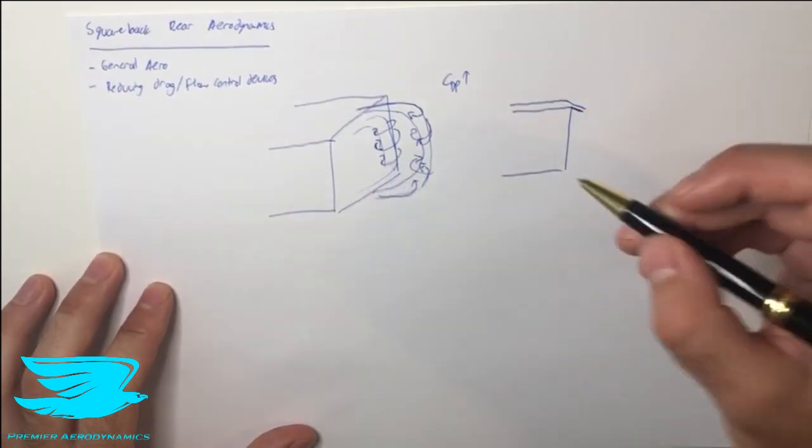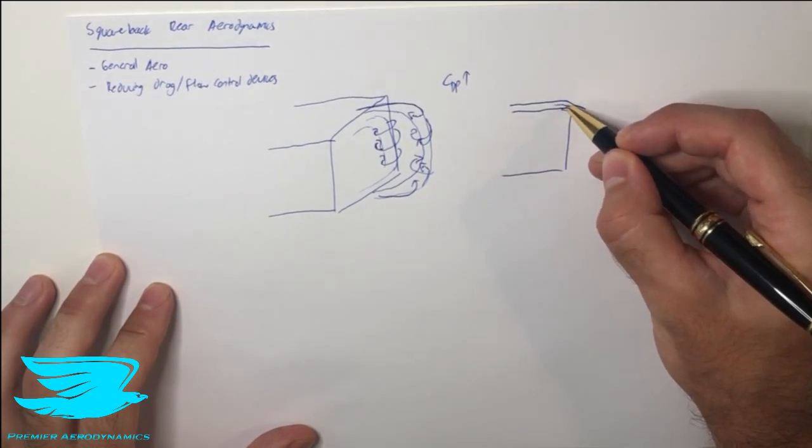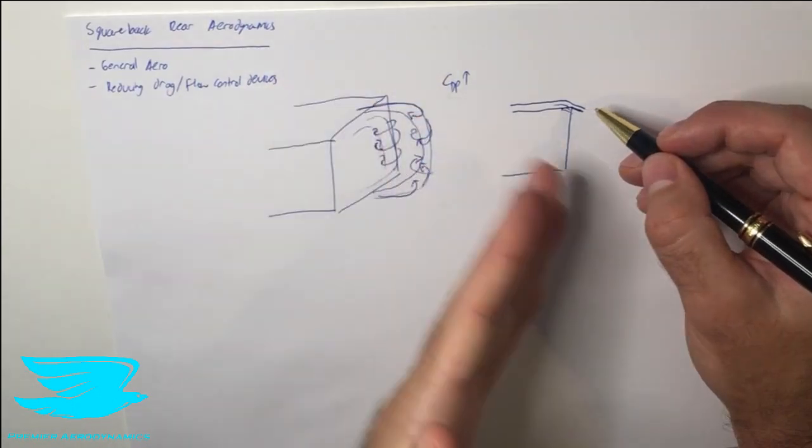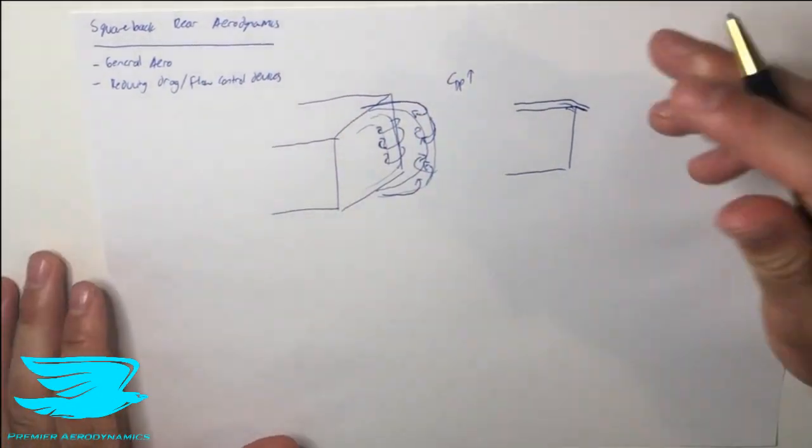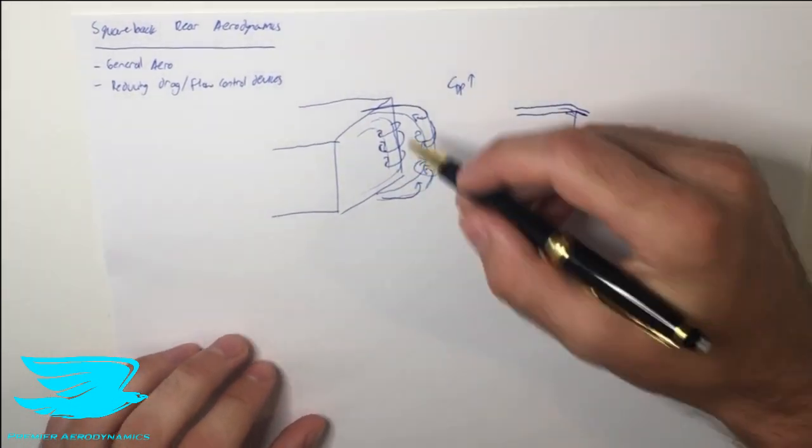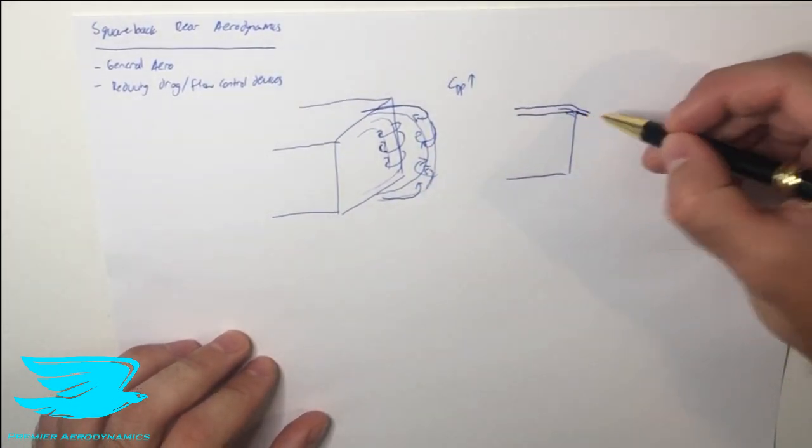Instead of if you have like a rounded surface for example, the flow might come across and it might separate here, might come down and separate a little bit further. It might shift back and forth in time and this results in a shear layer forming and we get these vortices, this vortex system. By having this little roof spoiler we can control where the flow separates.